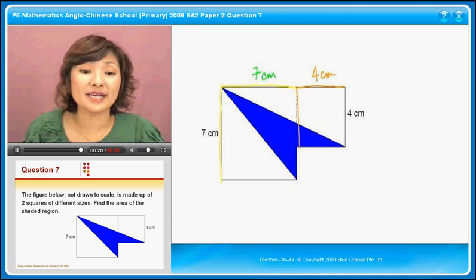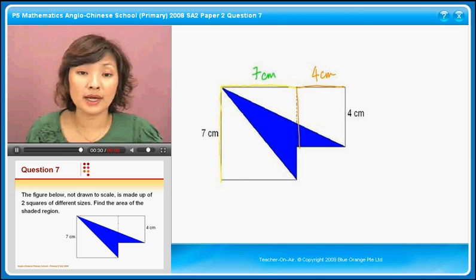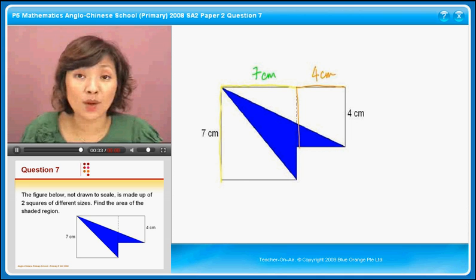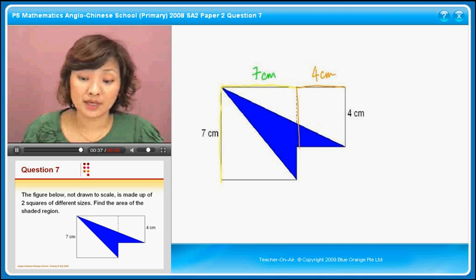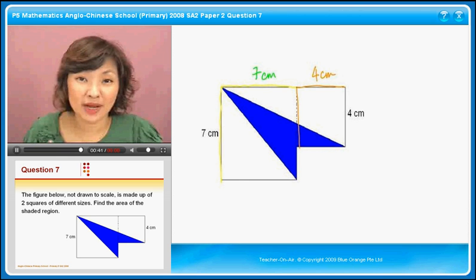Now the question is to find the area of the shaded region. There are a few ways for us to do area of shaded part. The first one is we always ask ourselves, do I have a formula for the area of the shaded part? So if you look at this arrow, there's no formula for arrow.